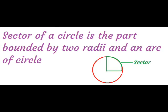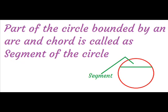The sector of a circle is the part bounded by two radii and an arc of the circle. The part of the circle bounded by an arc and chord is called a segment of the circle.